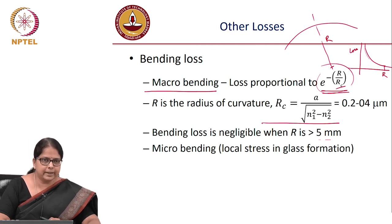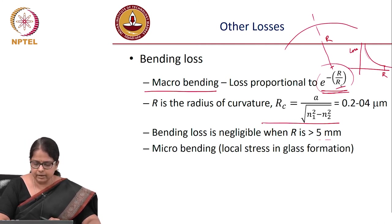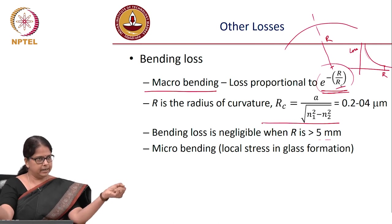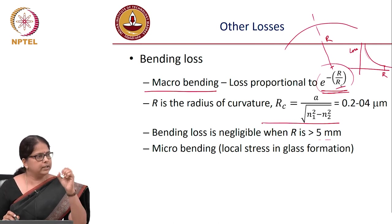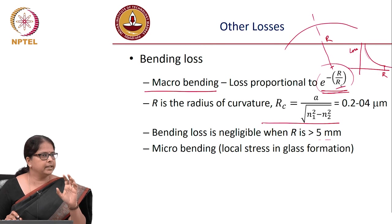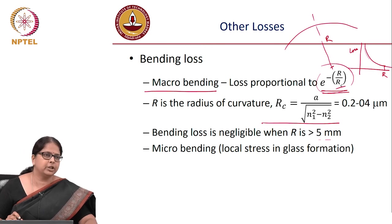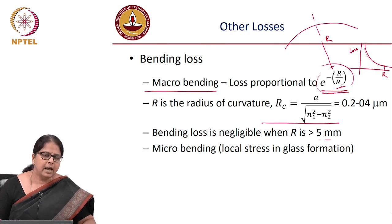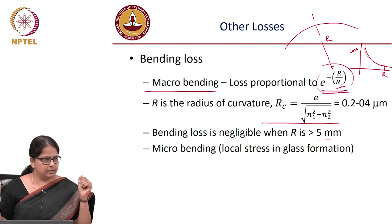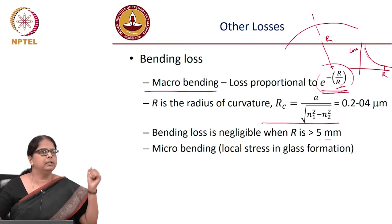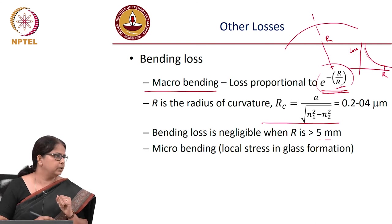Micro bending loss arises not from physical bending but from local stresses created during glass formation. This is unavoidable and is determined by the fabrication process; it is included in the total measured attenuation of the fiber.